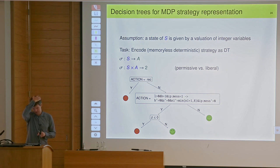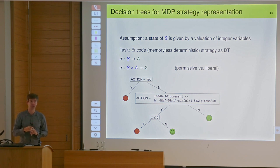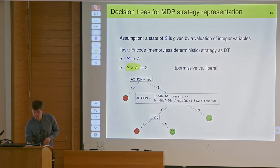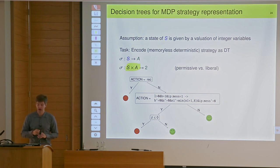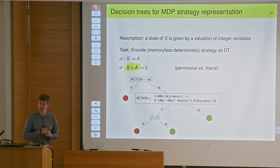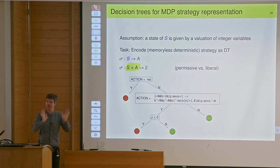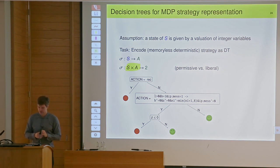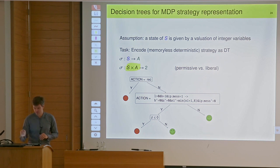In that case the decision trees may look a bit different. In the leaves there are not actions — I'm not classifying states according to what actions should be played. I am actually classifying state-action pairs as whether they are good or not: a happy smiley face or a sad smiley face. For simplicity let's assume the action space has no structure — it's just discrete. So I have just names of actions appearing in my model, for example in the PRISM language.